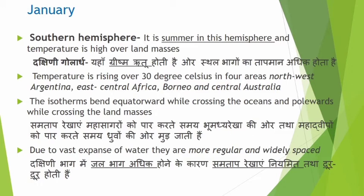When the southern hemisphere has a summer season, the northern hemisphere will be in winter season. Keep this in mind: the southern hemisphere experiences summer, temperature is high over land masses. The temperature is rising over 30 degrees Celsius in four areas along the Tropic of Capricorn — Argentina, Central Africa, Borneo, and Central Australia.